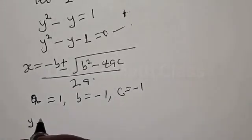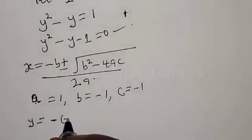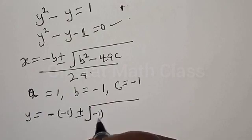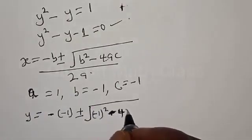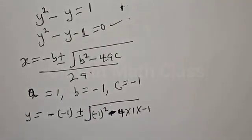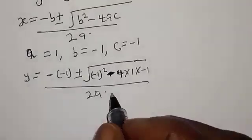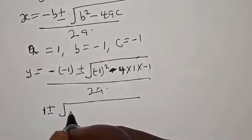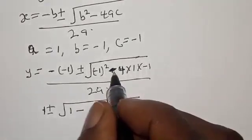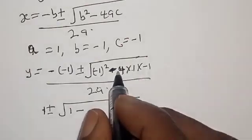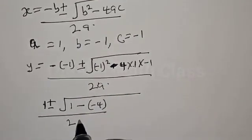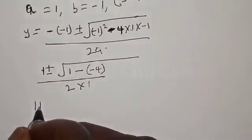Therefore we have y equal to minus b plus or minus square root of b squared minus 4ac, over 2a. Substituting: minus into minus 1, plus or minus square root of minus 1 squared minus 4 multiplied by 1 multiplied by minus 1, all over 2a.